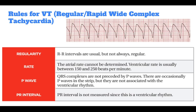QRS complexes are not preceded by P waves. There are occasionally P waves in the strip, but they are not associated with the ventricular rhythm. The PR interval is not measured since this is a ventricular rhythm.